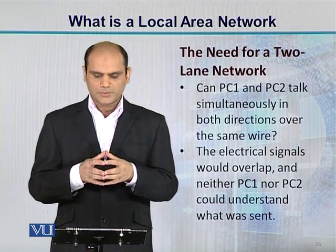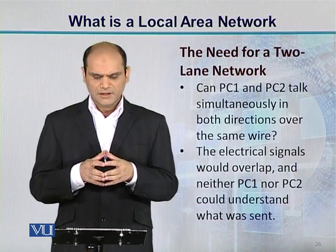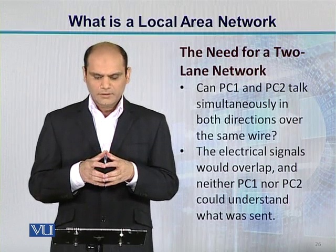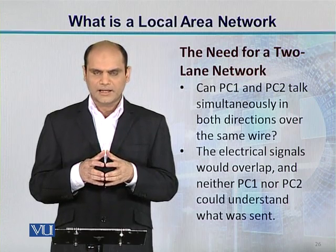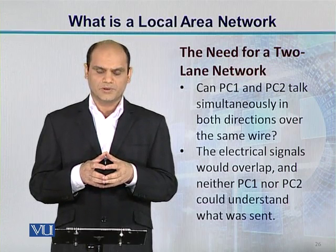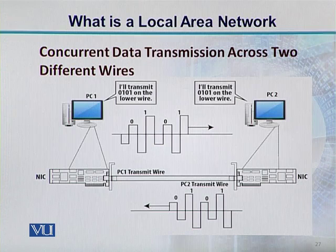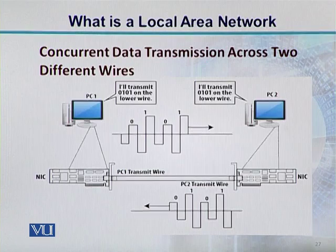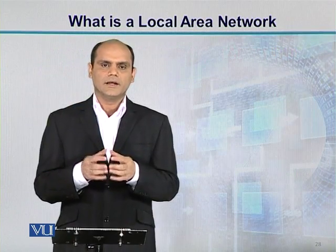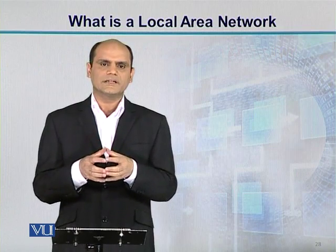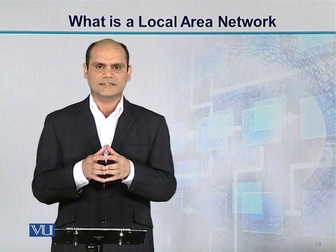Can PC1 and PC2 talk simultaneously in both directions over the same wire? No — the electrical signals would overlap and neither PC could understand what was sent. So concurrent data transmission requires two different wires: PC1 transmits on one wire and PC2 transmits on the other. Data can be transmitted in both directions simultaneously with the help of two wires. This topic covered the basics of a LAN — how two computers can work together as a simple LAN.